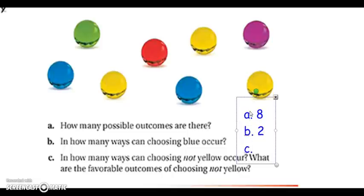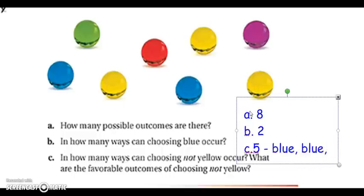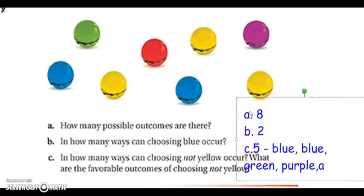See, how many ways can choosing not yellow occur? Well, out of my eight, five of them are not yellow. So there are five ways to choose not yellow. And then I want to list my favorable outcomes of choosing not yellow. So again, I need to list five things. What are those five things that produce not yellow? I have two blues, I have one green, a purple, and a red. So I have one, two, three, four, five.